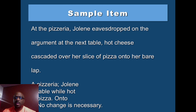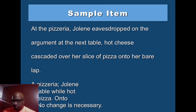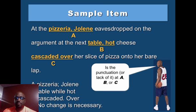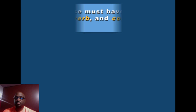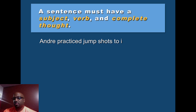Here's a fragment example: at the pre-series, Jolene eavesdropped on the argument at the table. Hot cheese cascaded over her slice of pizza onto her bare lap. Is something wrong with that sentence? Do we need a comma, a semicolon, a period, or is no change necessary? If you put option B — the comma between 'table' and 'hot' — that makes a comma splice, an error. Option B fixes it.